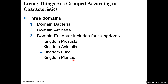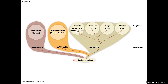Looking at a broad tree of life, you have domain bacteria, domain archaea, and domain eukarya. The eukaryotes split into four kingdoms: protista, animals, fungi, and plants. Each of these kingdoms separates into even stricter categories and levels, until you get down to a single species.